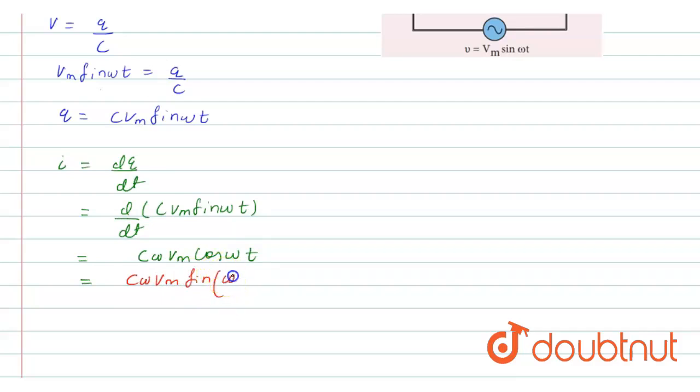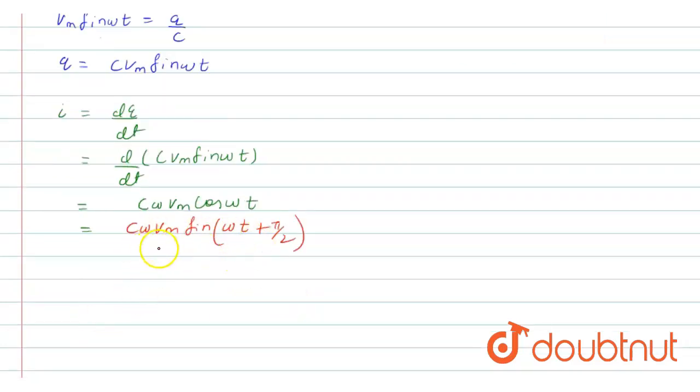So now with the help of this equation, we can say that current is ahead of voltage by phase of π/2 in an ideal capacitor. Thank you for watching.